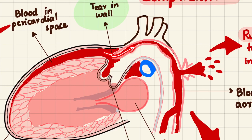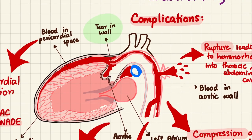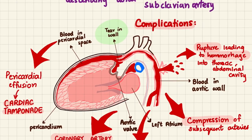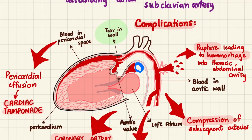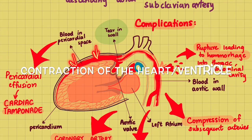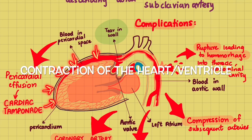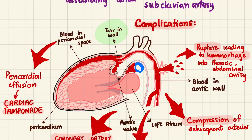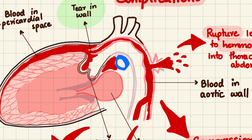What complications can this cause? First, blood that cannot go forward can go backward, ending up in the pericardial space. When there is blood in the pericardial space, it restricts the contraction of the heart — this is known as cardiac tamponade, a very dangerous complication of aortic dissection.